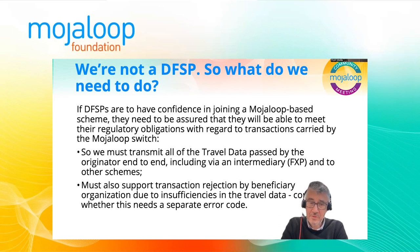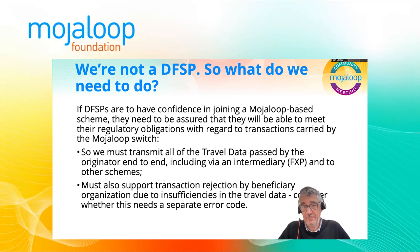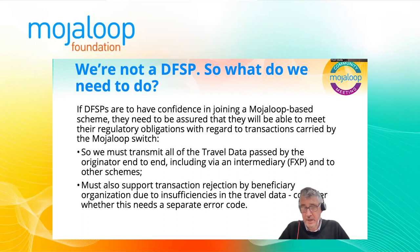We also have to support transaction rejection by the beneficiary organization due to insufficiencies in the travel data. We need to consider whether this needs a separate error code as well. And we need to specify that the FXP, when they are developing, needs to be carrying out these checks and potentially rejecting transactions on this basis.